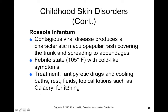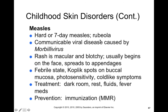Measles — hard or seven-day measles — is also called rubeola, and is caused by morbillivirus. It's a rash that's macular and blotchy, begins on the face, then spreads to the appendages. You also get a febrile state, Koplik spots in the buccal mucosa, and photosensitivity. Treatment is rest in a dark room and fluids, and it's prevented with the MMR vaccine.